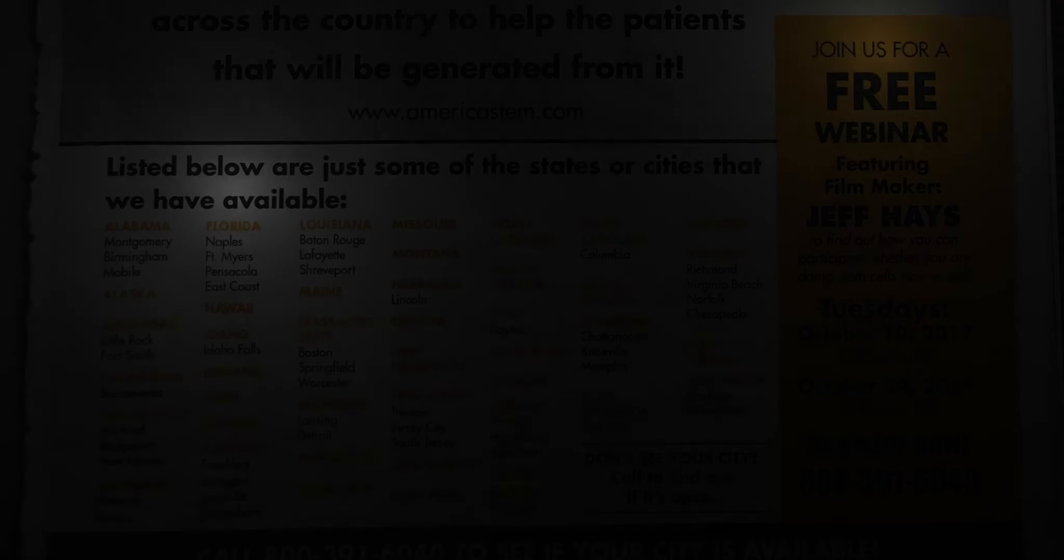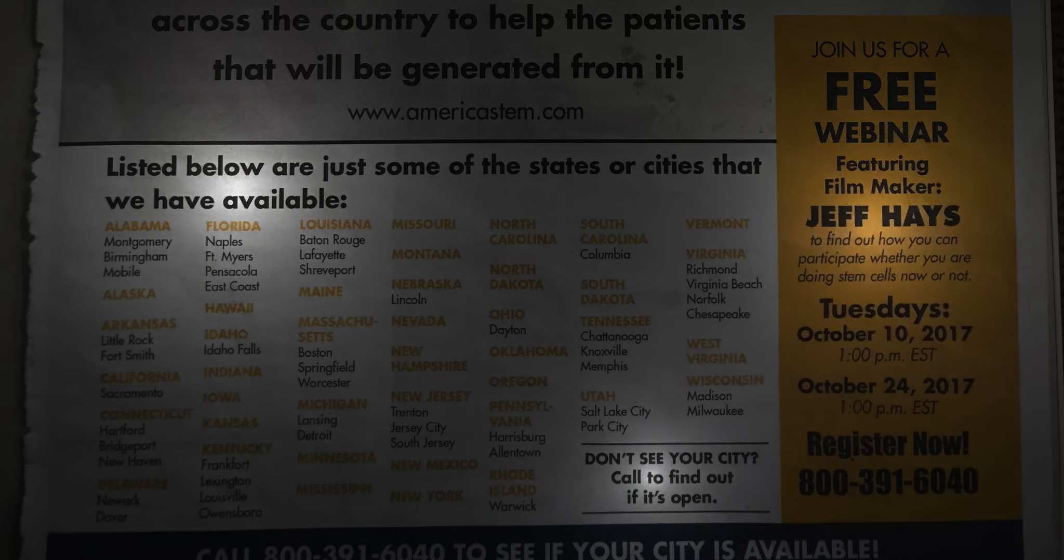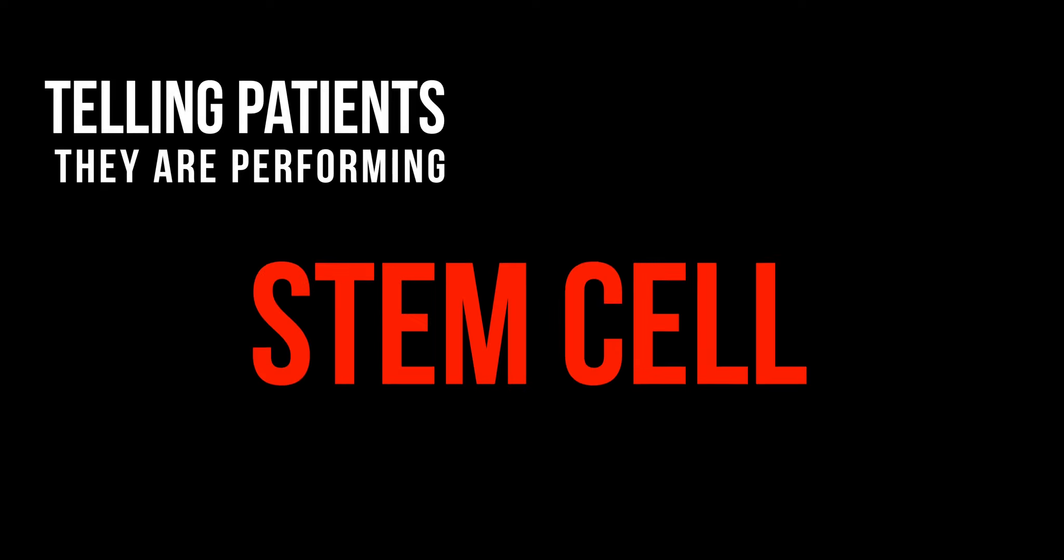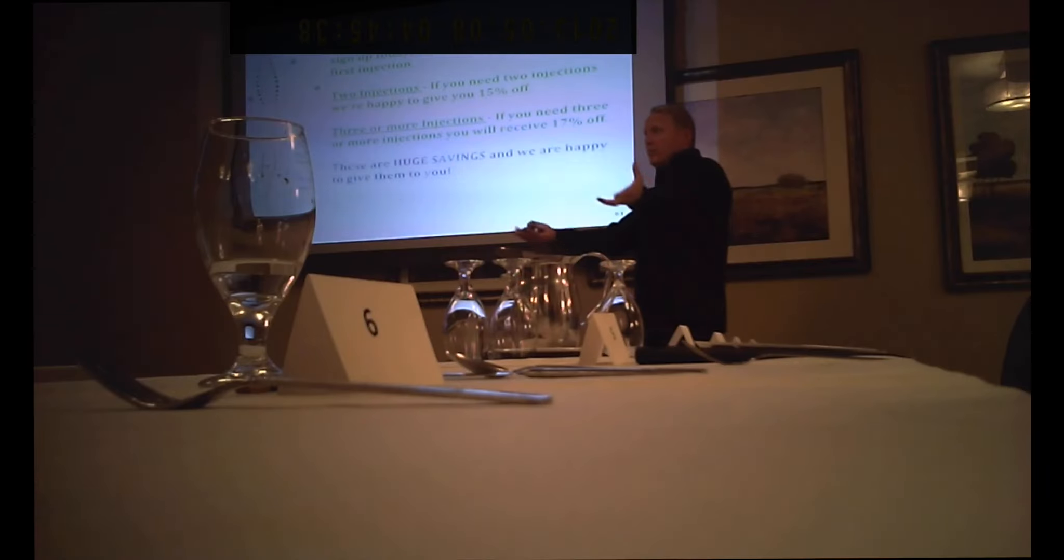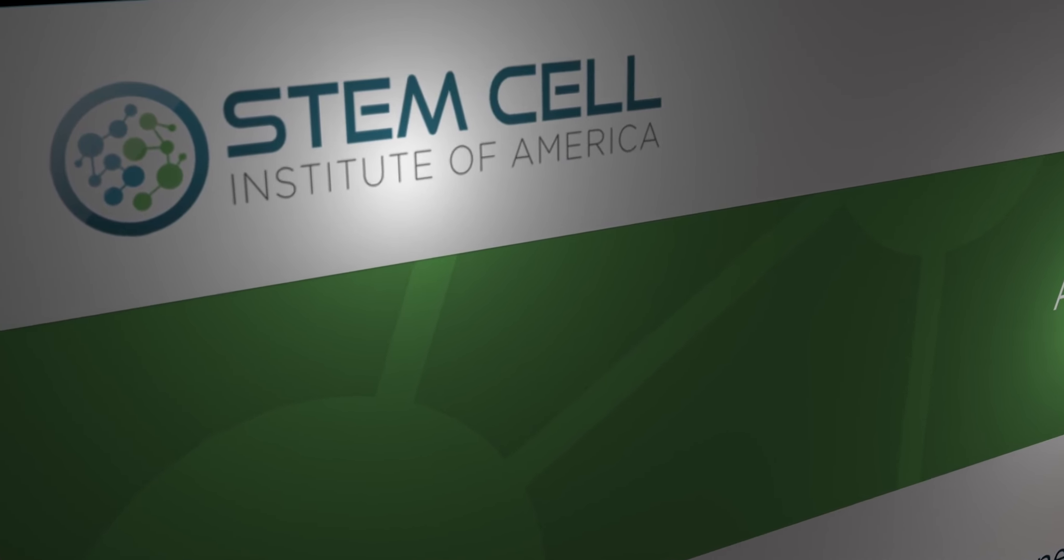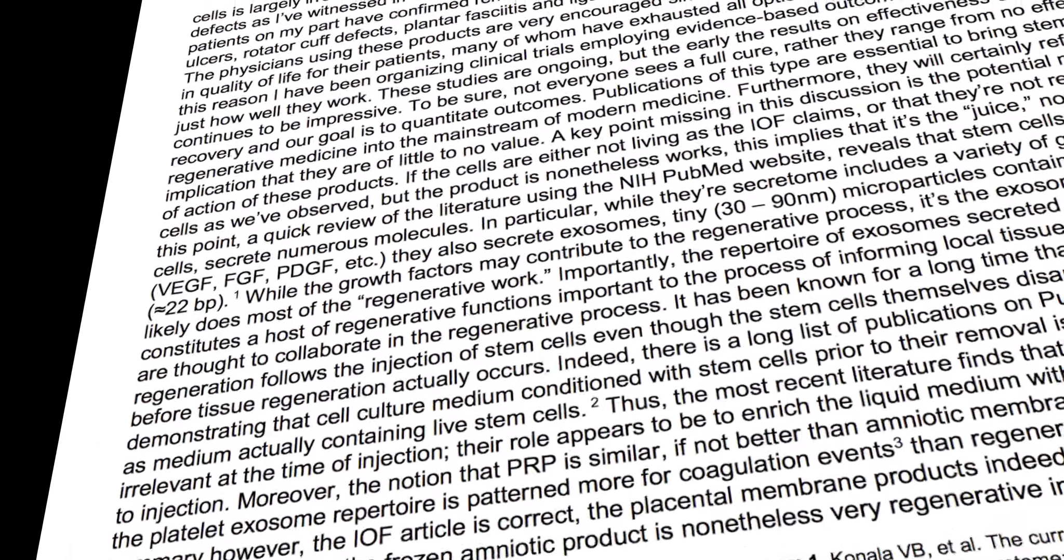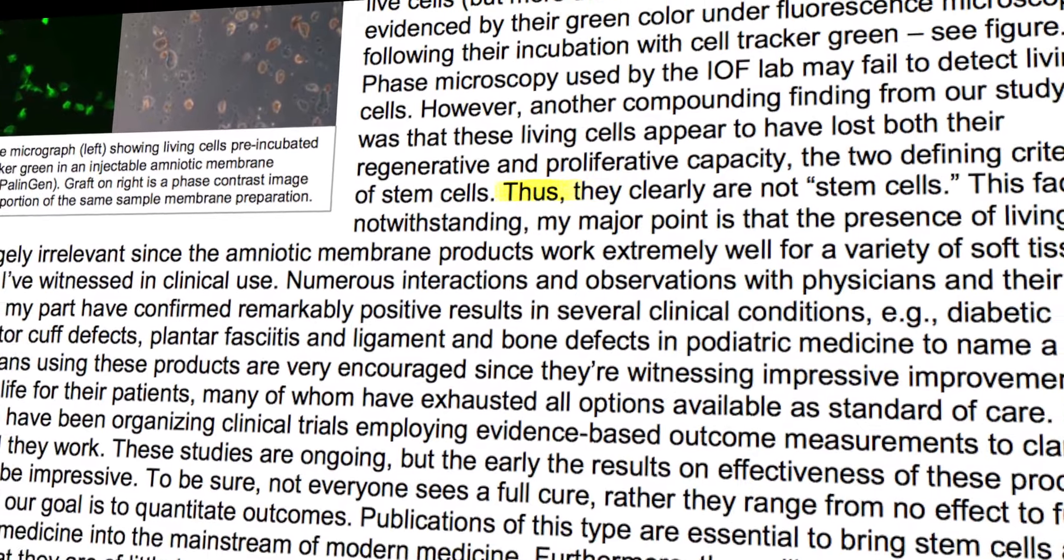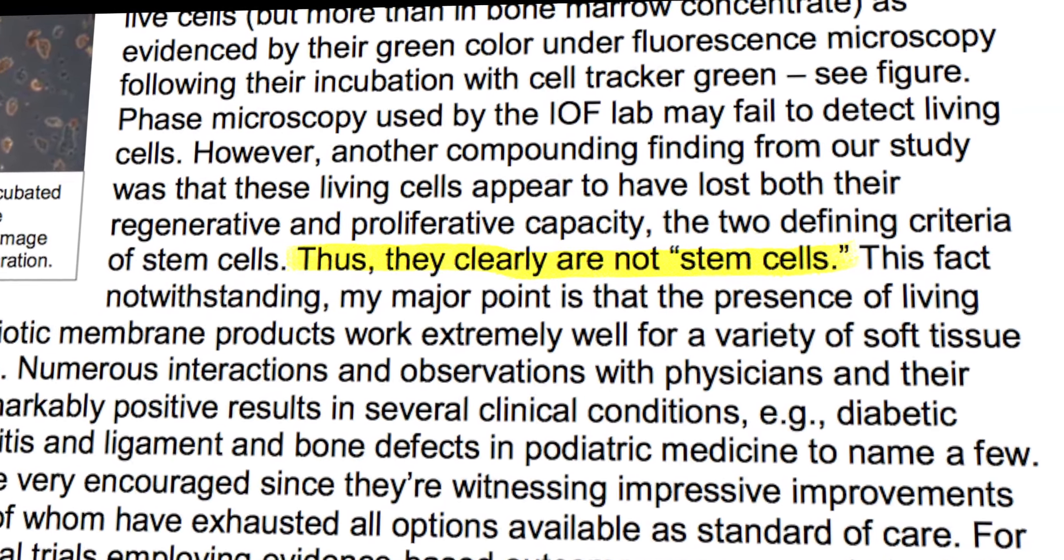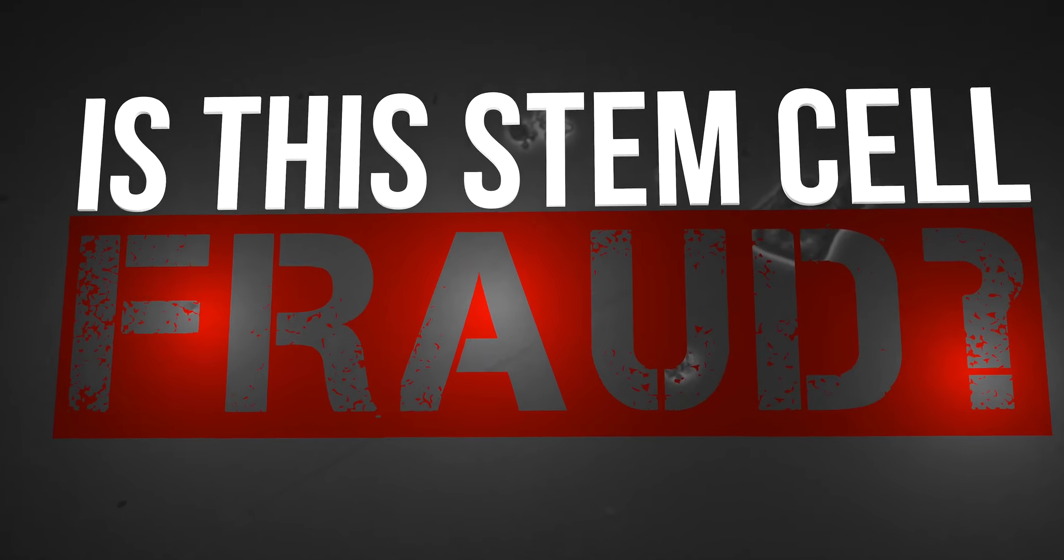So here's what we have. We have chiropractors all over the country who have signed on to the Stem Cell Institute of America network who are telling patients that they are performing stem cell injections. We know that the Stem Cell Institute of America says on their website that they use a product called Palingen Flow. We also know that the IOF and an independent PhD tested this product and found no stem cells. So if there aren't any stem cells, is this stem cell fraud?